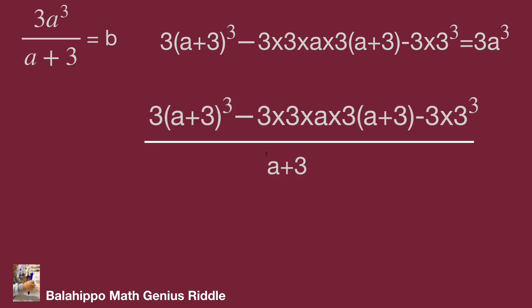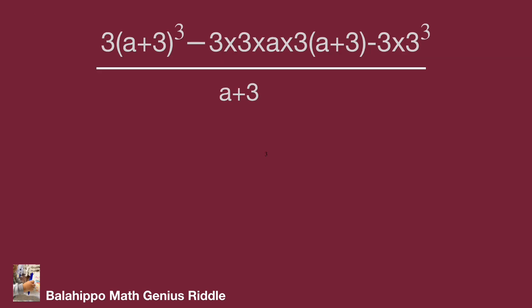Substitute this information into our given equation. Then we have 3(a+3)³ - 3·3·a·3·(a+3) - 3·3³ over a+3.